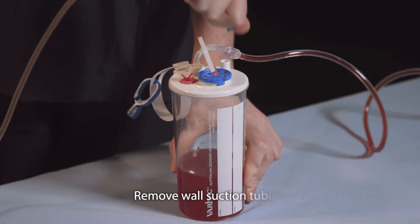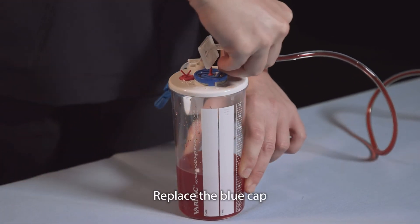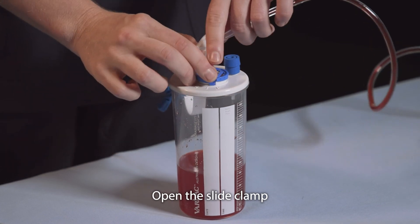Once this has happened, you may remove the wall suction tubing, replace the blue cap, and open the slide clamp on the canister to resume drainage.